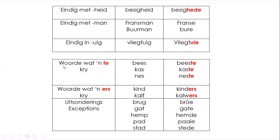Laat ons kyk na woorde wat TE kry. Bees word beeste. Kas word kaste. Nes word neste. Woorde wat ERS kry: kind word kinders. Kalf - it's an F, we do not say the F, it changes to a W - kalf word kalwers.